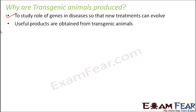Useful products can also be obtained from transgenic animals. The best example is the first transgenic cow, named Rosie. It produced milk like all other cows, but the milk contained a lot more protein compared to normal cow's milk. So that milk was nutritionally more balanced than natural cow milk, and more healthy for human babies.